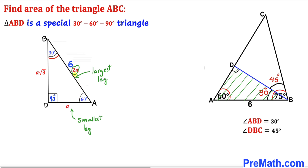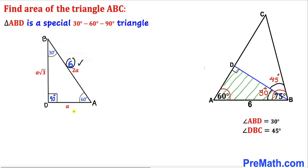In this special 30-60-90 triangle, the longest leg is twice as much as the smallest leg. If the smallest leg is 'a', the hypotenuse is 2a and the longer leg is a times square root of 3. We know AB is 6, so the smallest side BD is half of 6, which is 3 units, and side AD is going to be 3 times square root of 3.